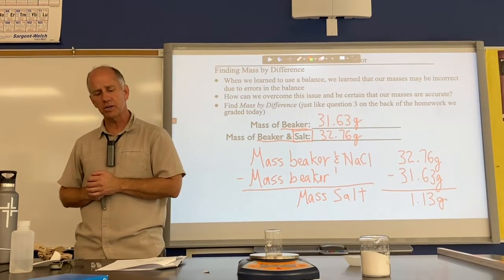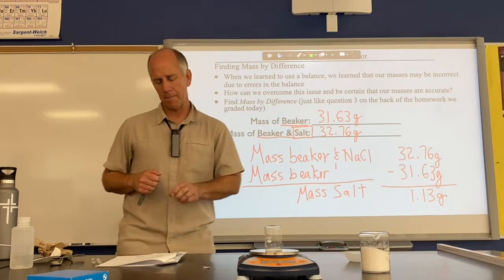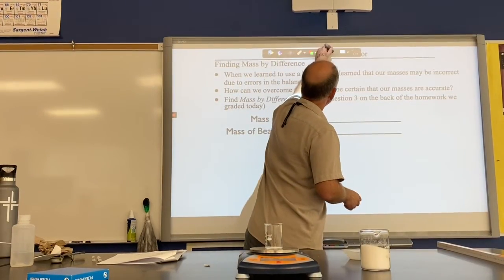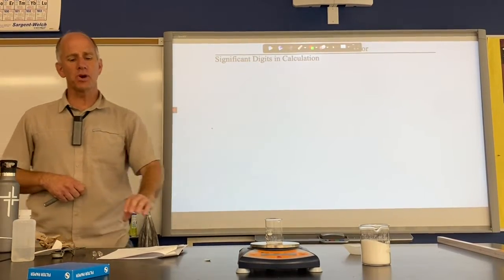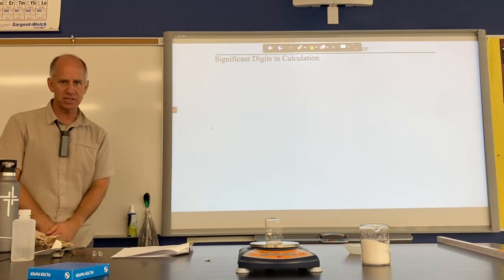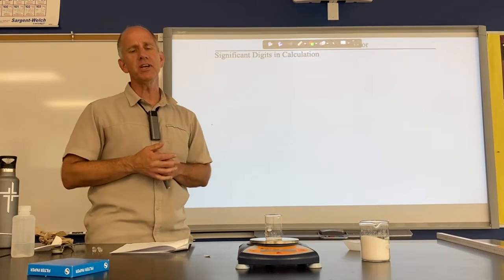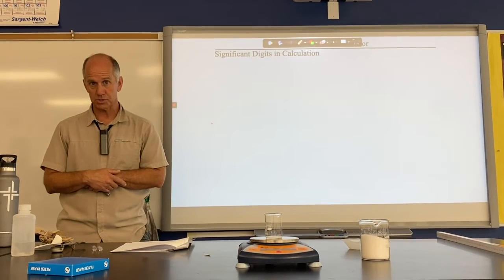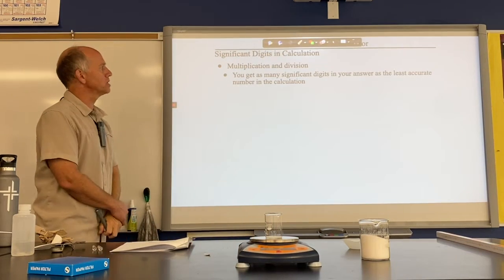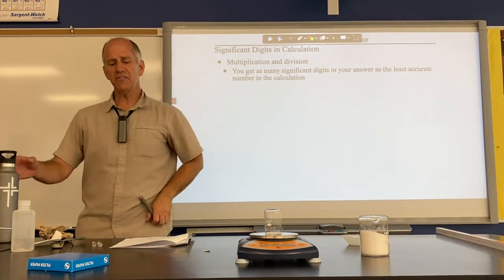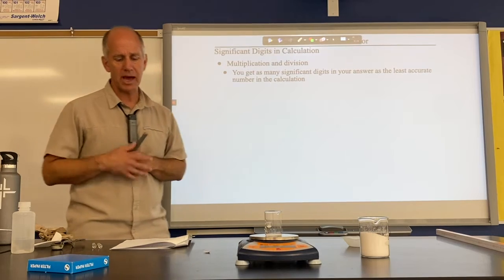Now we need to bring our work with significant digits into a mathematical setting. Currently you know how to identify significant digits and how to round. Now we do it mathematically. The rules are these: when you multiply or divide, you get as many significant digits in your answer as the least accurate number in the calculation. When you add or subtract, significant digits do not matter — decimal places do.